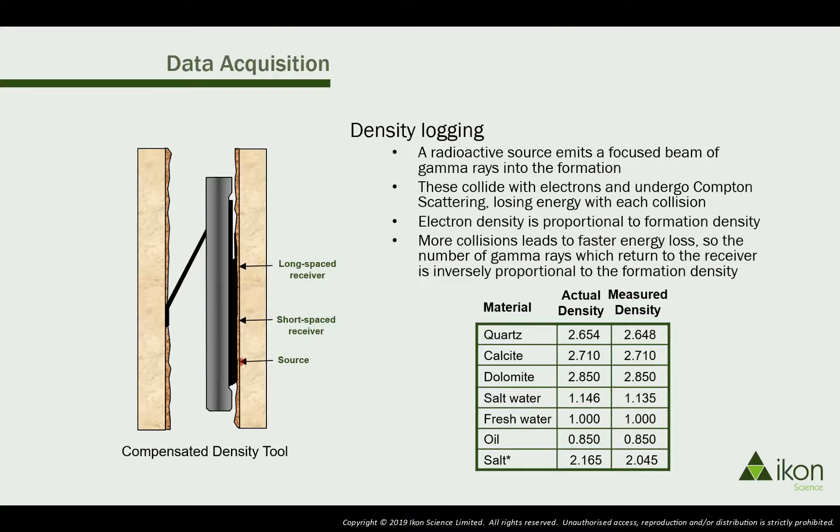The tool works by firing gamma rays into the formation. These collide with electrons and become scattered. The more scattered they become, the fewer make it back to the receivers, where a low reading indicates a high electron density and hence formation density.